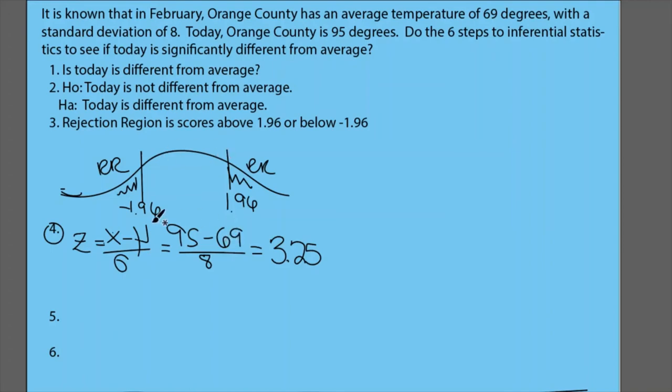All right. So now we want to put that in our picture. So here we have 1.96. This is the line for 1.96. So where would 3.25 go? It's probably going to be over here. And so this line here, let me get long, that is our z-score for today's temperature.